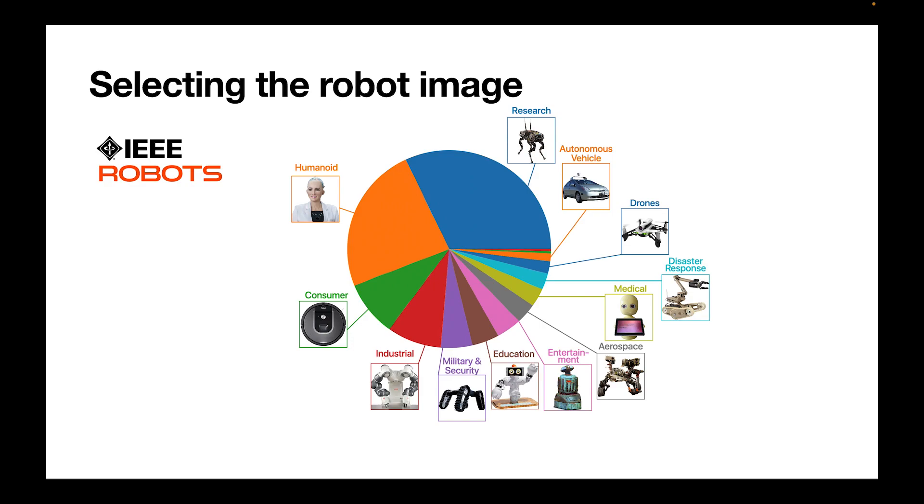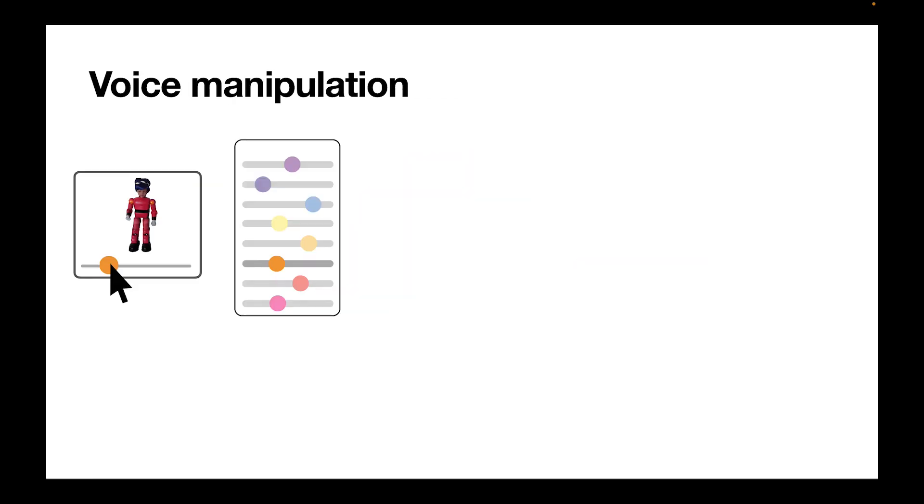The first step is to obtain robot images. We select the IEEE robots database because it covers a lot of different robots. A participant changes one dimension at a time.